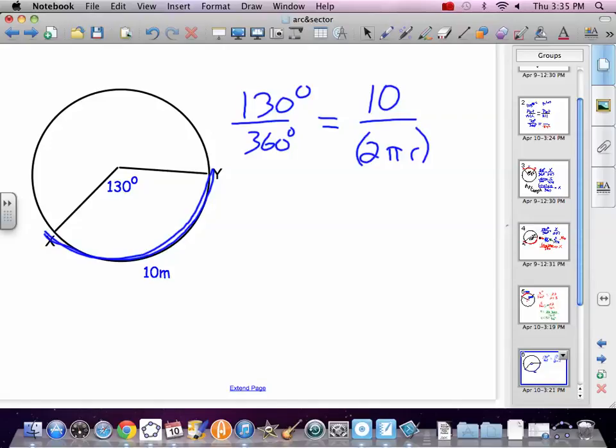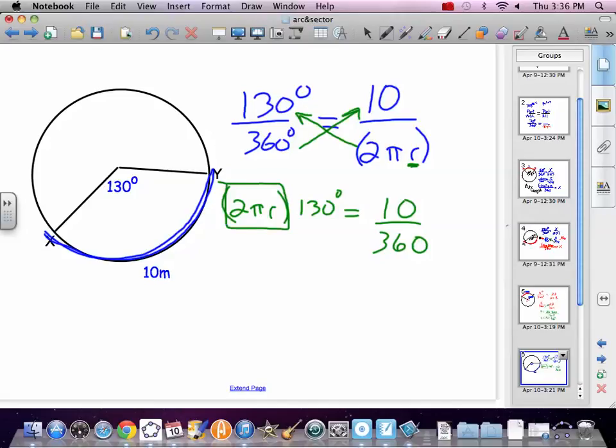Alright, do we want to cross multiply? Definitely. We don't like having variables in the denominator. So you definitely want to bring that up. You also want to bring the 360 up. So we have 2 pi r times 130 equals 10 over 360. Now what? We want to find circumference, which is 2 pi r. So we kind of just treat 2 pi r as x. That's our variable. Alright, so what's on the same side as x? What 130 is. How do you get rid of 130? Divide.